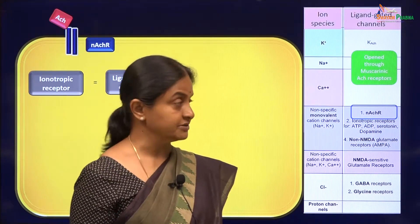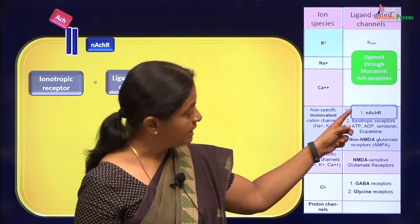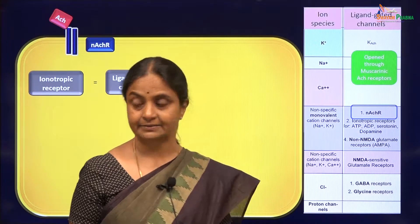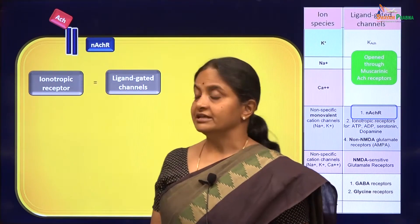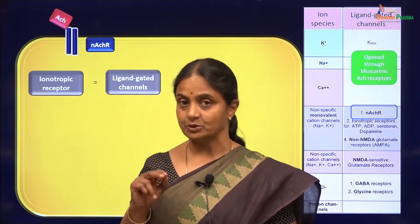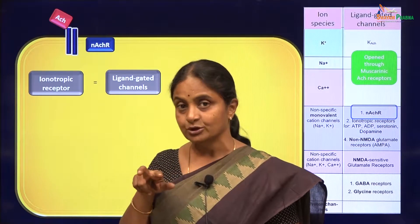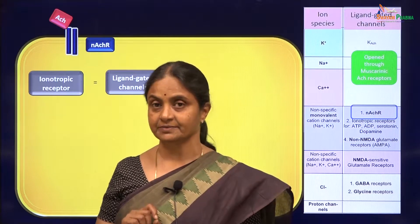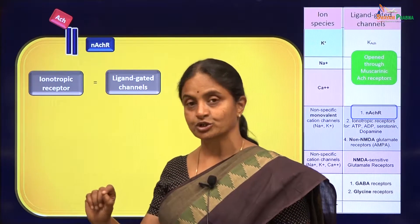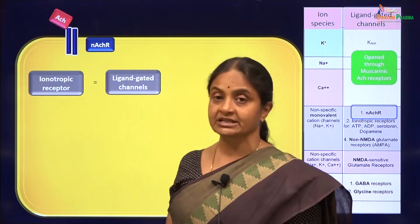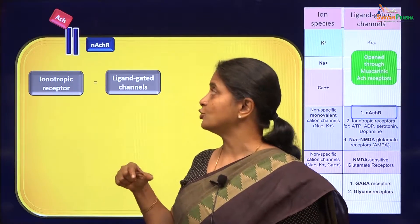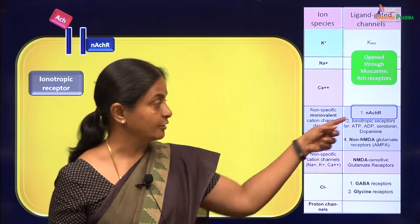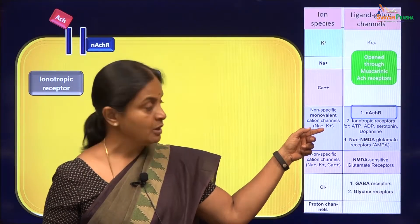Let us first look at the acetylcholine receptor — the nicotinic acetylcholine receptor — and along with that we will consider the potassium channel gated by acetylcholine, the KACH channel. The nicotinic acetylcholine receptor is located on the membrane of skeletal muscles at the motor end plate — the neuromuscular junction — where the nerve enters and communicates with the muscle. Acetylcholine is the neurotransmitter released by the motor nerve onto the muscle cell membrane, then it binds to the nicotinic acetylcholine receptor. That receptor itself is a channel; it opens up permitting ion movement. It is a non-specific monovalent cation channel which permits both sodium and potassium to go across.